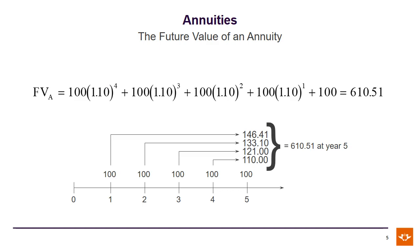Once again, if we break down the detail, this slide demonstrates the concept of value additivity in much greater detail. You can see that when we're calculating the future value and taking all of those values to the end of year 5, the first R100 earns interest for 4 years, because the payment is made at the end of the first year. The second payment earns interest for 3 years. And the last payment actually doesn't earn any interest at all, because it is made at exactly the same time as the value of the entire investment is calculated. So altogether, we get a value of R610.51 at the end of 5 years.